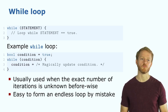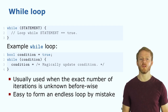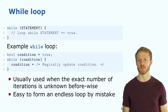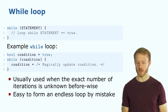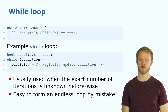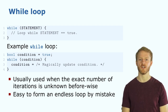The while loop executes something when a condition is true. As shown in the second example, whenever the condition changes, we exit the loop. This is used when we don't know the number of iterations in advance. It's easy to accidentally create an endless loop if the condition is never changed.